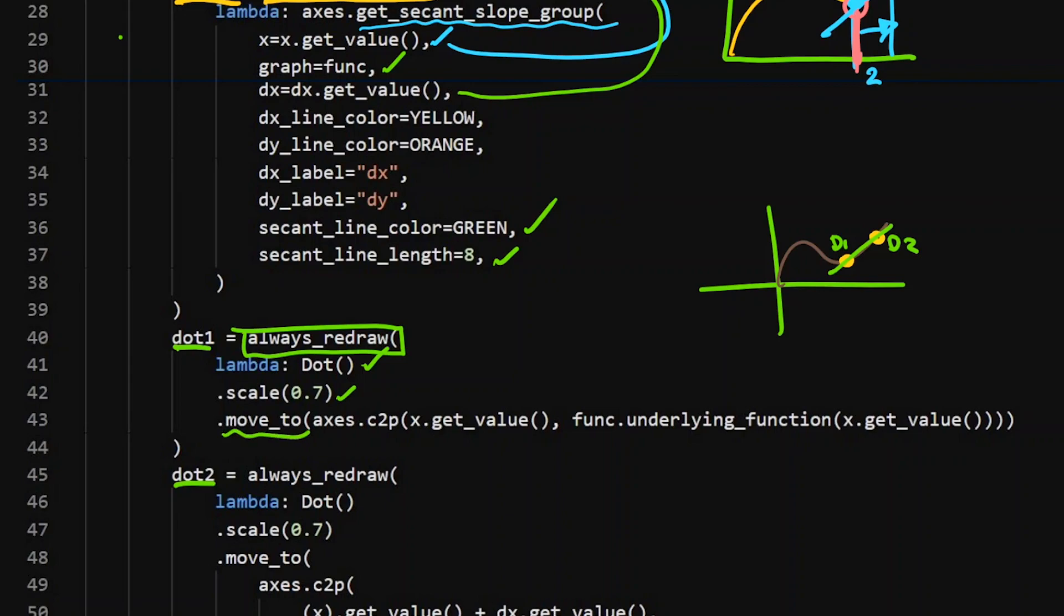Now this dot is positioned by the value tracker. I'm saying move_to axis.coordinate_to_point. So move it to the screen on the axis and pick this coordinate to stick to, which is the value x and then f of x. And that's just going to stay on the function for whatever the x point is. And you can see that it's this x.get_value, which is my value tracker.